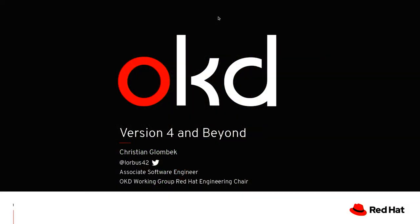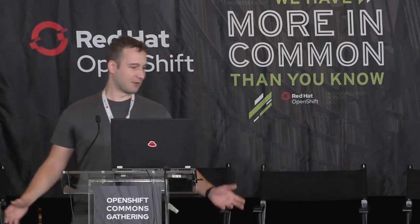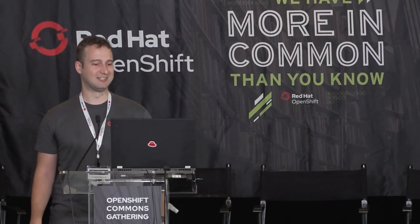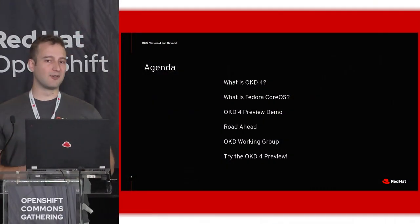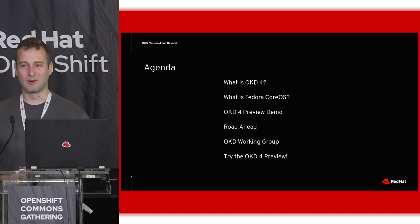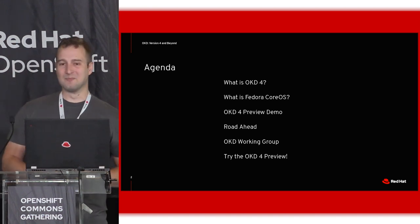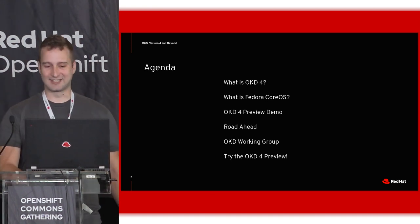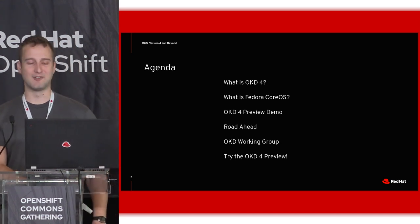I'm very happy to be here. My name is Christian Glombeck. I'm based out of Berlin and I'm the Red Hat internal engineering chair on the OKD working group. Today I'm going to talk about what OKD 4 is, what Fedora CoreOS is, give a little preview demo of OKD 4, talk a bit about the road ahead, plug the OKD working group, and share some links so you can try out the OKD 4 preview.